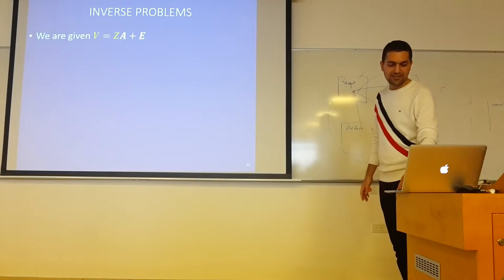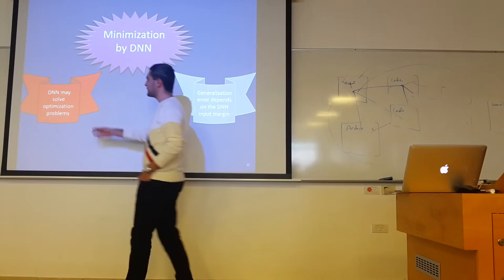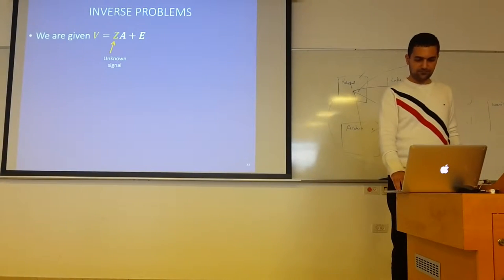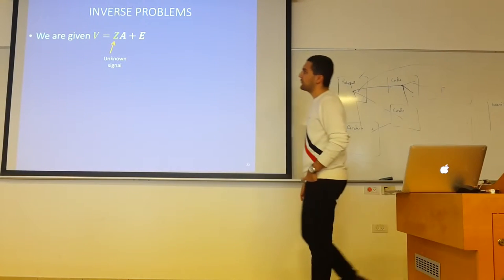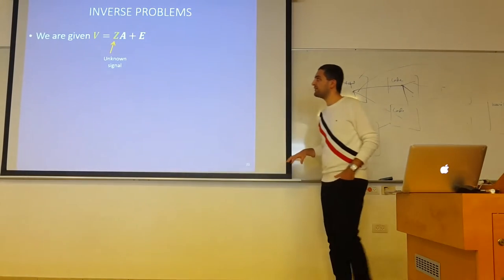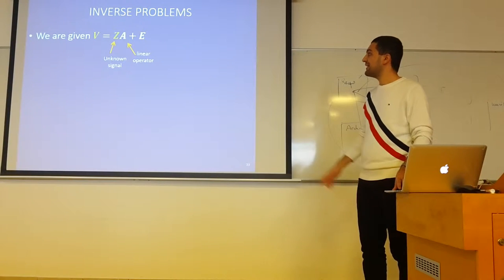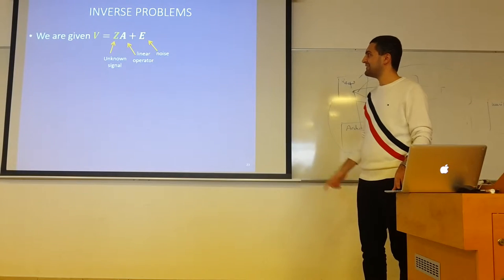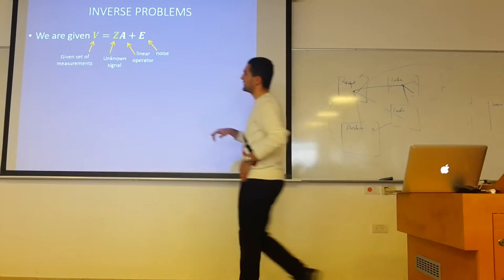So the second part — we'll try to understand how the neural network solves optimization problems. We will consider an inverse problem where we are given a measurement. We have an unknown signal Z that passes through a linear operator A and added noise, and then we have a given set of measurements.